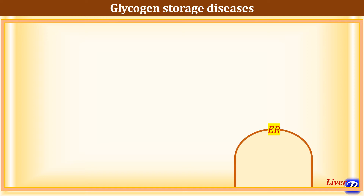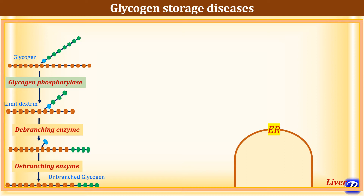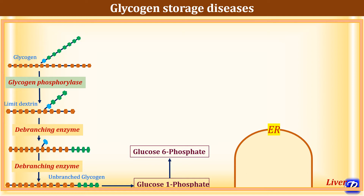Let's first understand glycogenolysis in short so that we can understand the defects of glycogen storage diseases. This is a structure of glycogen which is degraded by the action of enzyme glycogen phosphorylase to form limit dextrin. Limit dextrin is further degraded by de-branching enzyme, which is a bi-functional enzyme, and it results in the formation of unbranched glycogen. This unbranched glycogen is further acted upon by glycogen phosphorylase and de-branching enzyme, ultimately to form glucose 1-phosphate as well as free glucose. This glucose 1-phosphate is converted to glucose 6-phosphate by the action of enzyme phosphoglucomutase.